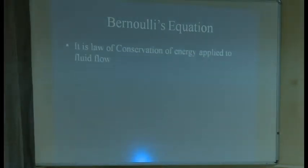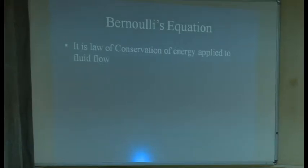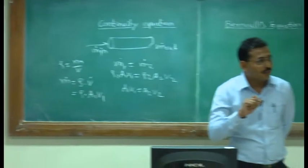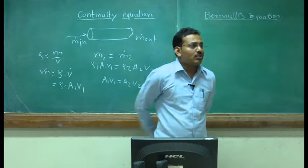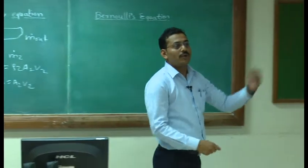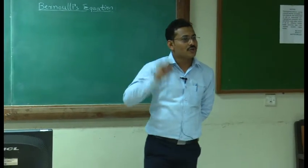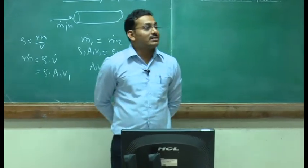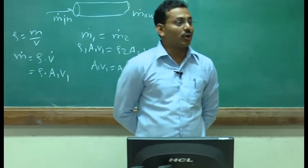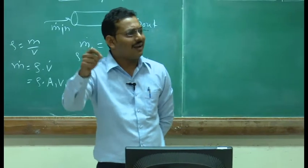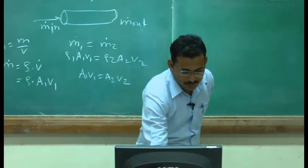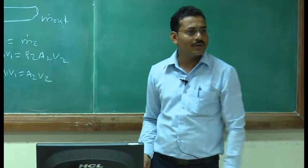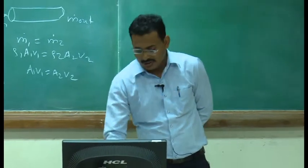Next is Bernoulli's equation. The continuity equation was the law of conservation of mass. Bernoulli's equation is the law of conservation of energy applied to fluid flow. It states that for a steady and incompressible fluid flow, the total energy at any point should be constant. The various energies associated with the fluid are: pressure energy, kinetic energy, and potential energy. The sum of all three energies should be constant at any point. Pressure energy is written as p, kinetic energy as rho*v²/2, and potential energy as rho*g*z.